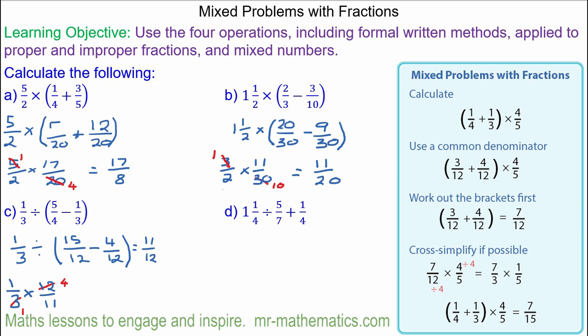Then we have one over one times four over eleven, which is just four over eleven.